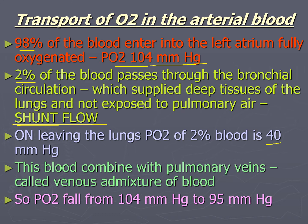This blood combines with pulmonary veins, called venous admixture of blood. As a result, the partial pressure of oxygen falls from 104 mm of Hg to about 95 mm of Hg.